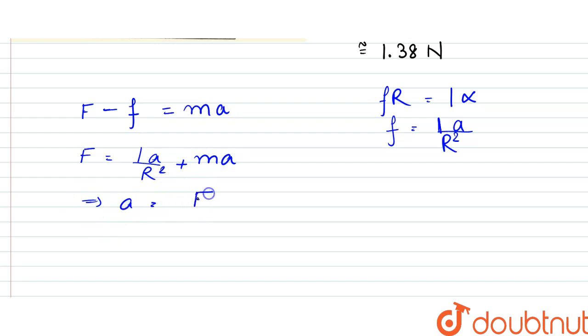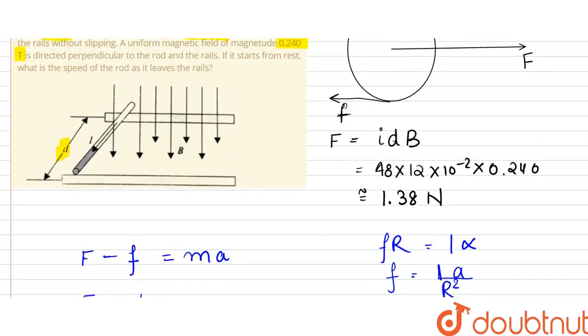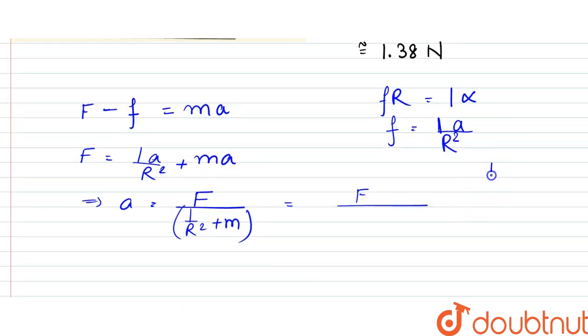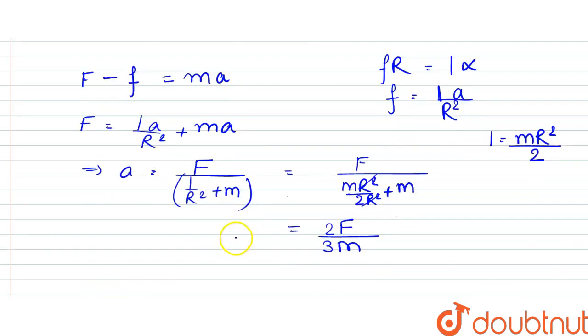From here, acceleration a = F / (I/r² + m). For a rod, the moment of inertia is mr²/2. Substituting: a = F / (m/2 + m) = F / (3m/2) = 2F/3m.